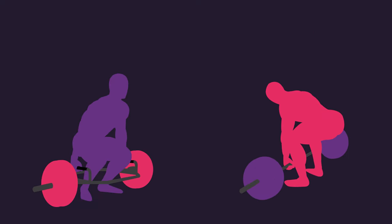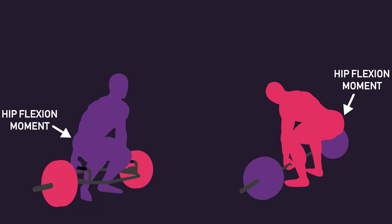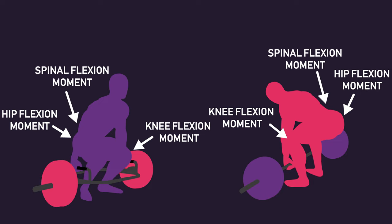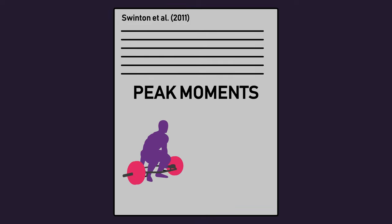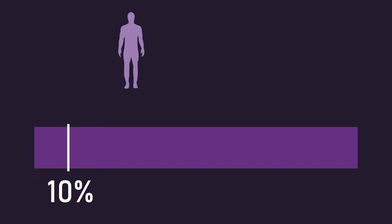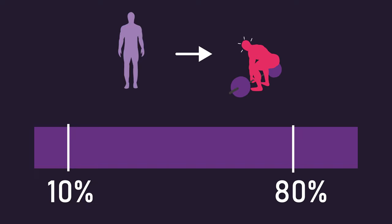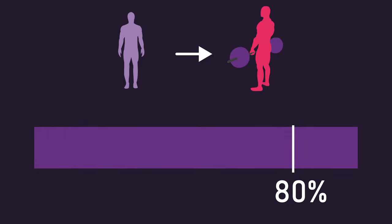With both the trap bar deadlift and conventional deadlift, the external moments are a hip flexion moment, knee flexion moment, and a spinal flexion moment. A 2011 paper by Swinton and colleagues compared the peak moments between a trap bar deadlift with low handles and a conventional deadlift. Subjects who were trained powerlifters performed both lifts with loads from 10% to 80% of their conventional deadlift one-rep max. Let's take a look at the results when subjects used 80% of their conventional deadlift one-rep max on both exercises.